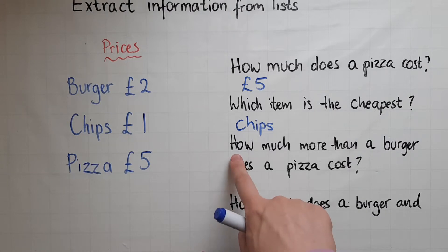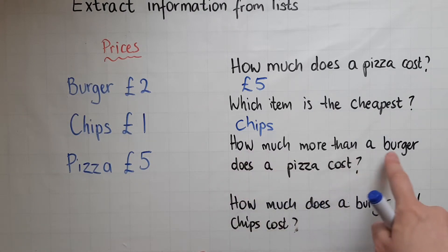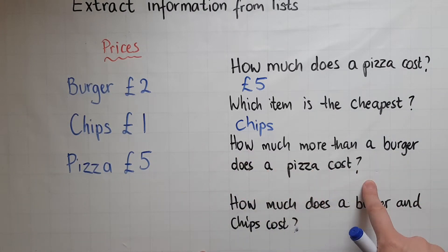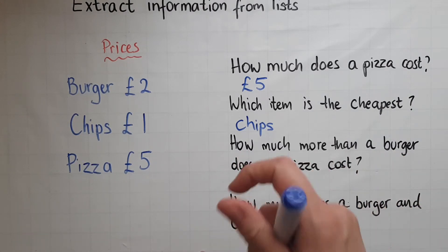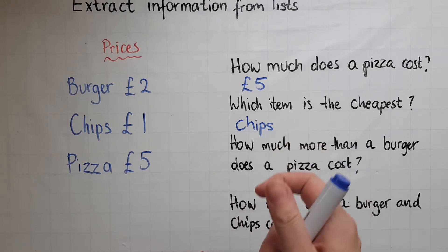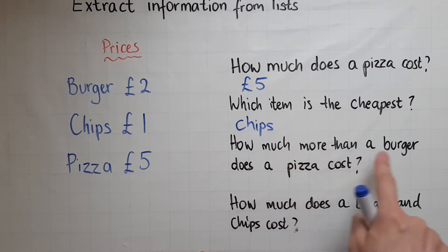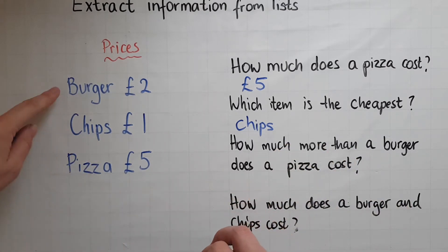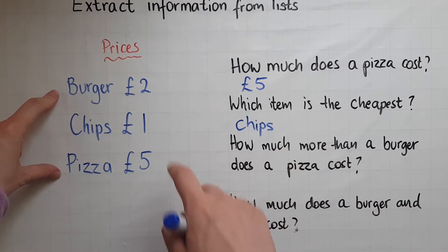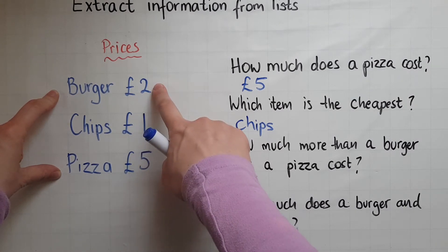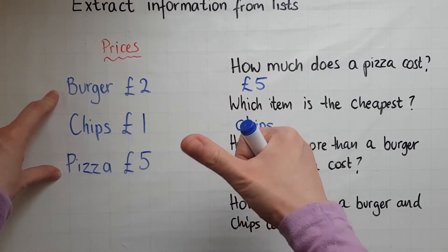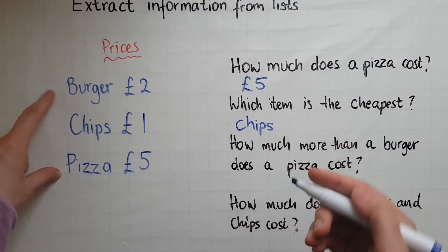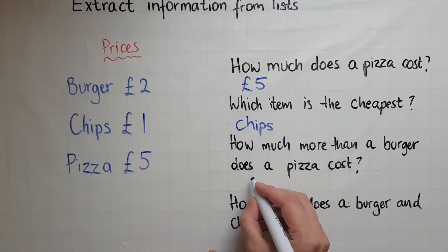Then we've got: how much more than a burger does a pizza cost? So how much extra, how much more? We're looking at a burger at two pounds and a pizza at five pounds. So we count: three, four, five — that's three pounds more.